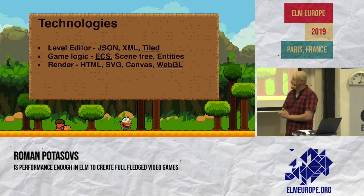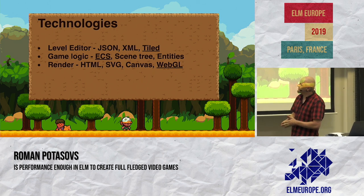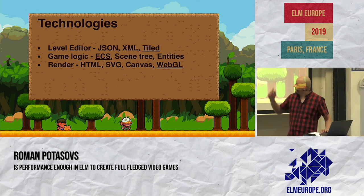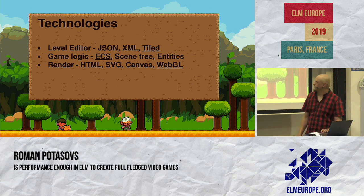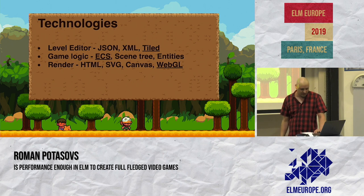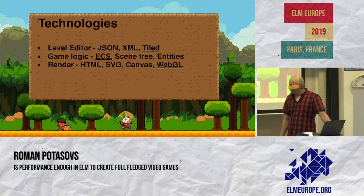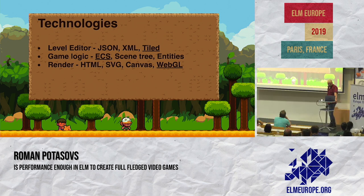Technologies you can use to build any game. There are plenty of possibilities. Starting with a level editor — that is something what in Elm we call just model. You can use different formats like JSON, XML, or any pre-built application like Tiled. Next is game logic, also with many options: you can use ECS (entity component system), which is used mostly in all today's engines, or something different like code entities. Then there is rendering — you can render in WebGL, SVG, or low-level canvas, although canvas is not really accessible in Elm.